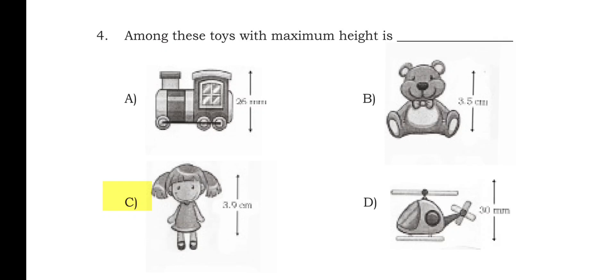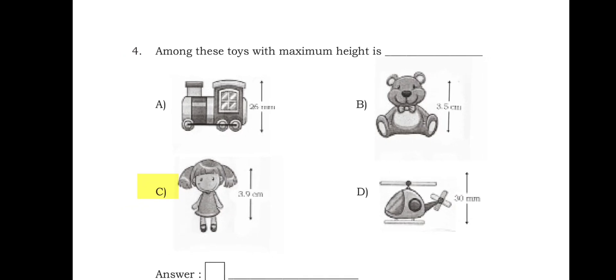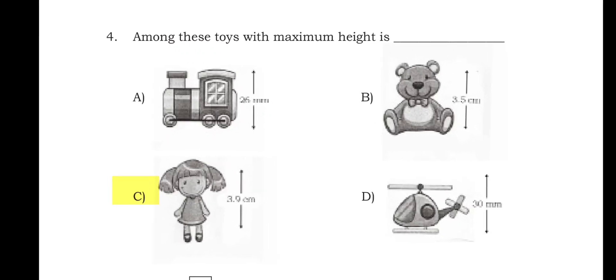Question 4: among these toys, the maximum height is — in the picture, the train is 26 mm, the teddy bear is 3.5 cm, the doll is 3.9 cm, and the aeroplane is 30 mm. The maximum height is 3.9 cm, which is the doll. Option C is the right answer.